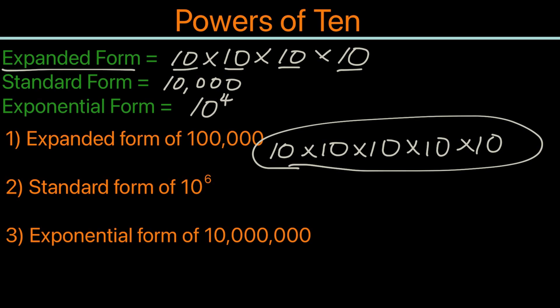Now for the second example: what is the standard form of 10 to the power of 6? When you multiply by 10 six times, it means that there will be a total of 6 zeros. So we can take 1 and then 6 zeros behind: 1, 2, 3, 4, 5, 6. Then we place the commas in. The answer would be 1 million.